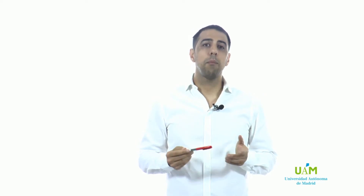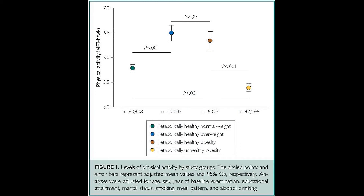In this work we found some interesting results. For example, only 4% of the total sample had a metabolically healthy obesity phenotype, whereas 21% had a metabolically unhealthy obesity phenotype. The metabolically healthy obesity phenotype had higher levels of physical activity than the metabolically unhealthy obesity phenotype, even higher levels than the metabolically healthy normal weight participants. During a mean follow-up of 6 years, among participants with metabolically healthy obesity, 66% moved to the unhealthy phenotype.